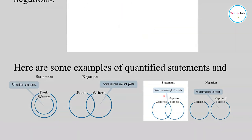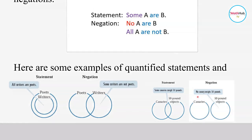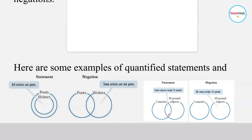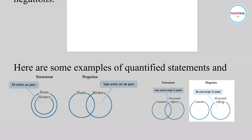Consider the statement 'Some canneries weigh 50 pounds.' The negation of 'some' is 'none' or 'no,' so negating this gives 'No cannery weighs 50 pounds.' In the Venn diagram, 'some canneries weigh 50 pounds' refers to the intersection region of canneries and 50-pound objects. To negate it, that intersection must not exist — the two sets are completely separate with no overlap.